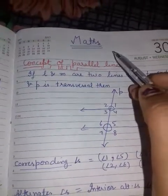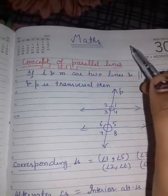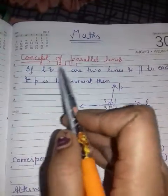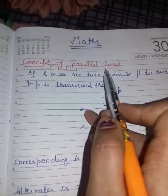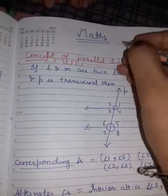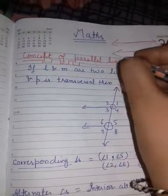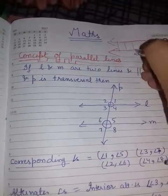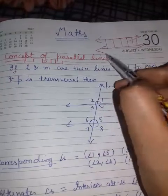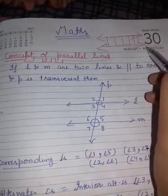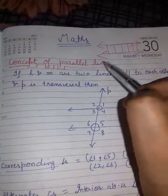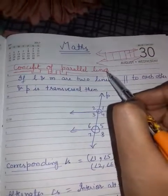Today we are going to discuss the concept of parallel lines. What is a parallel line? Parallel lines are lines which have the same distance everywhere. These will never intersect with each other, however far they are produced. These lines are known as parallel lines.